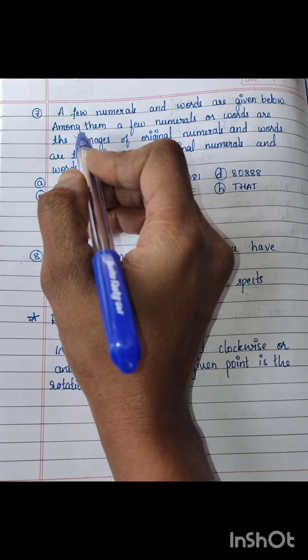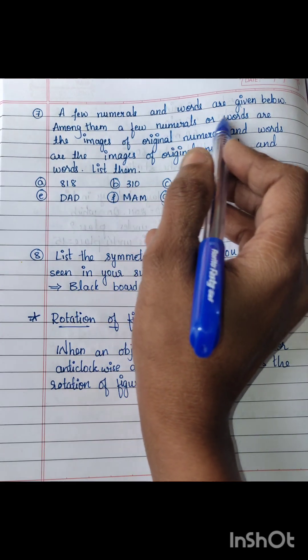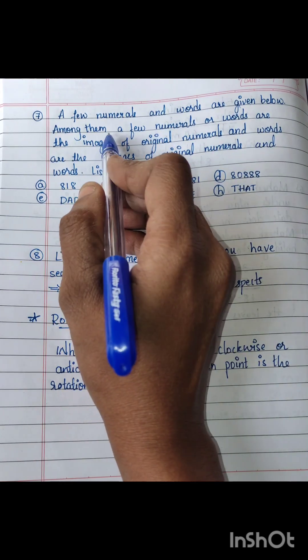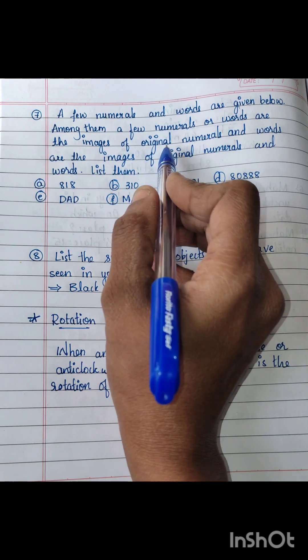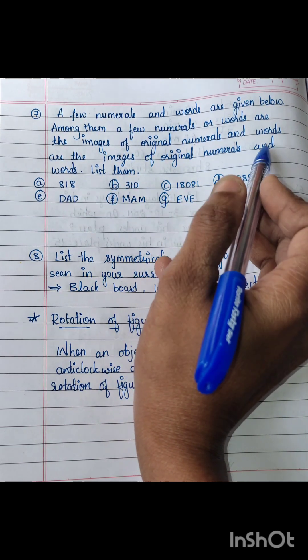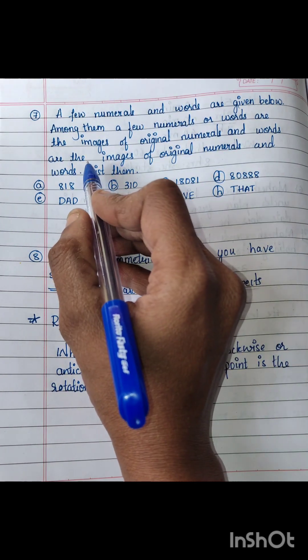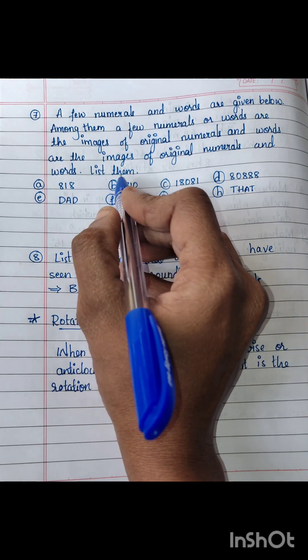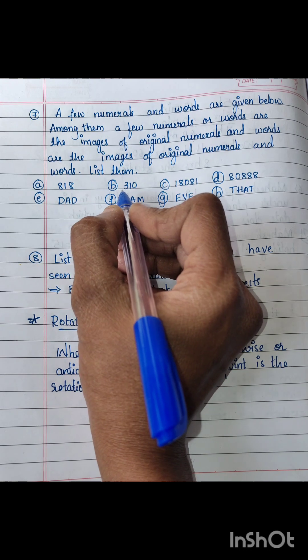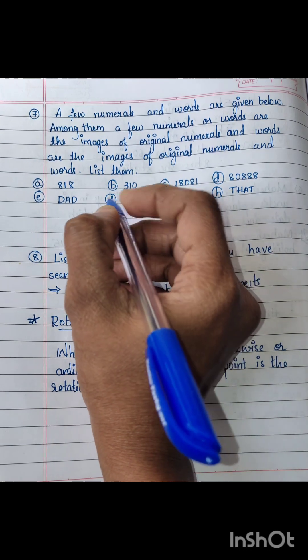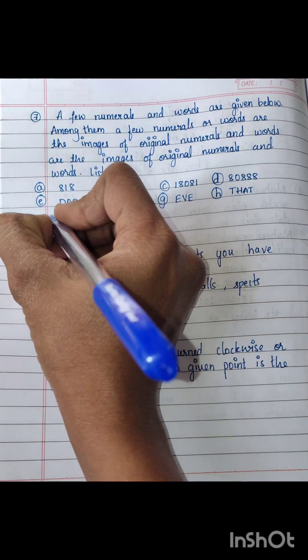Now seventh one. A few numerals and words are given below. Among them, a few numerals or words are the images of original numerals and words. And you have to list them. So first one, one eight one eight, second three ten, these are the given words. So you have to list them.